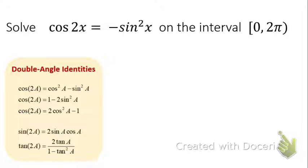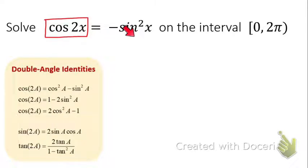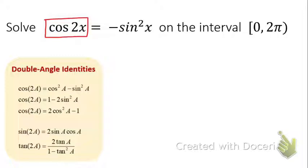We have a double angle identity again, right here. For cosine double angle, there are three choices. We want to look at the rest of the equation to help figure out which is the better substitution. I notice I have a cosine double angle and a sine squared, so I want a substitution that uses sine. The third choice is a definite no — using it would introduce two different ratios, sine and cosine, and we wouldn't be able to move forward.